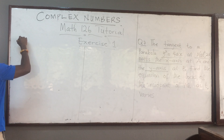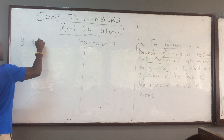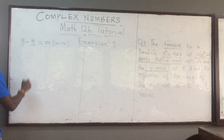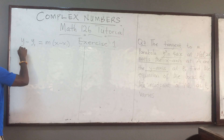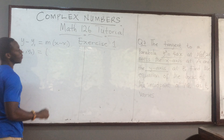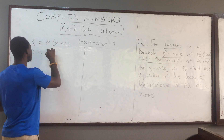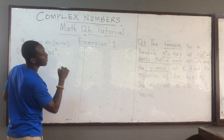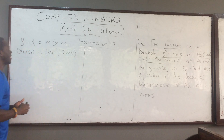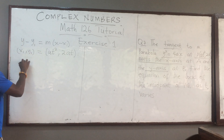The general equation of the tangent is y − y₁ = m(x − x₁). What are our x₁ and y₁? Our point (x₁, y₁) is the point of tangency, which we can write as (at², 2at). So we substitute this point into our general equation of the line.